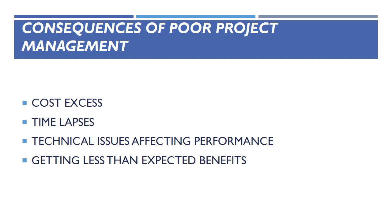In order for these systems to function, users frequently have to create parallel manual systems. The systems' actual design may fall short of capturing crucial business needs or enhancing organizational effectiveness. Information may not be sent quickly enough to be useful, might be presented in a way that makes it difficult to understand and utilize, or it might reflect the incorrect types of data.